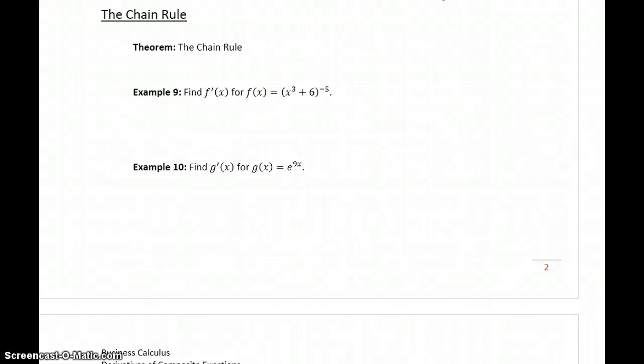The chain rule is a general rule that's going to summarize all of our basic differentiation properties. So what it states is that for some function m of x, which is a function composed of f of g of x.